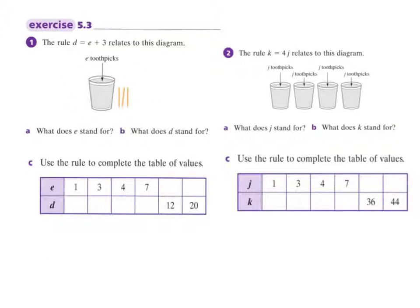Let's look at our diagram. E equals the number of toothpicks, and 3 is just this. So our question is, what does E stand for? E is just the number of toothpicks in the jar, or in the glass, in the cup, whatever you want to call it. What does D stand for? D equals the number of toothpicks in here, which is E plus the 3. So D is the total number of toothpicks.